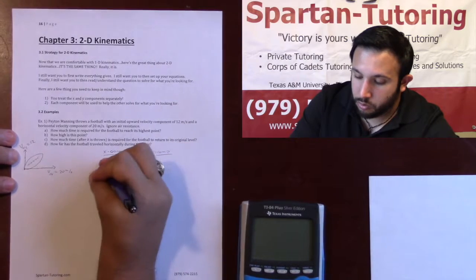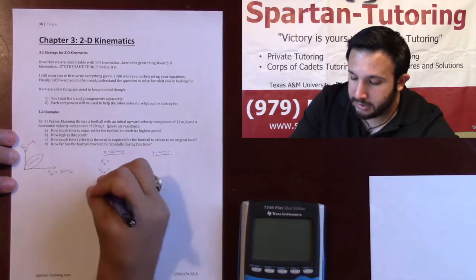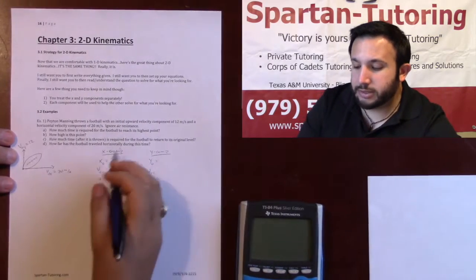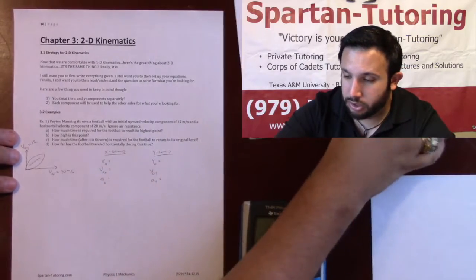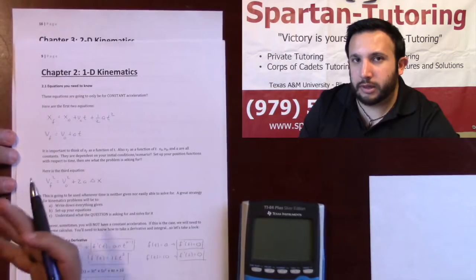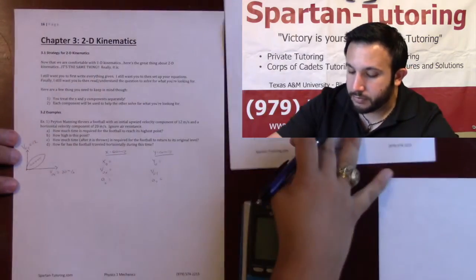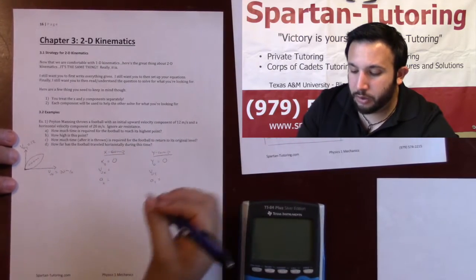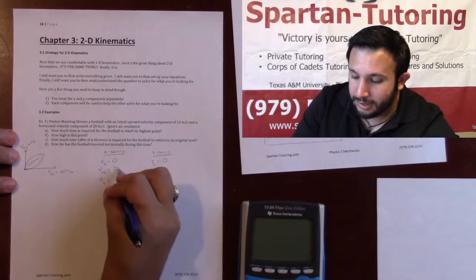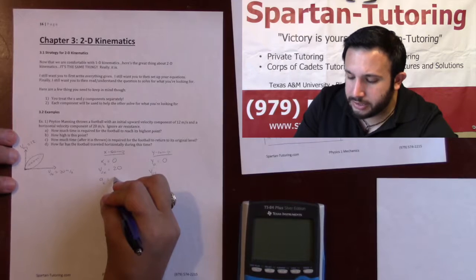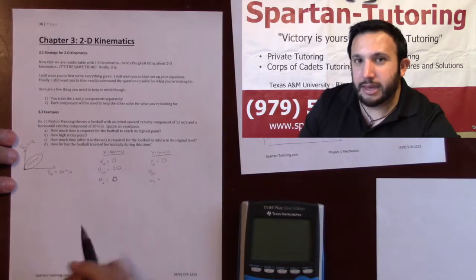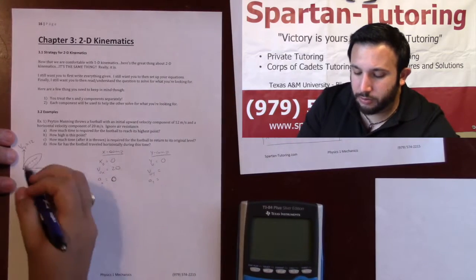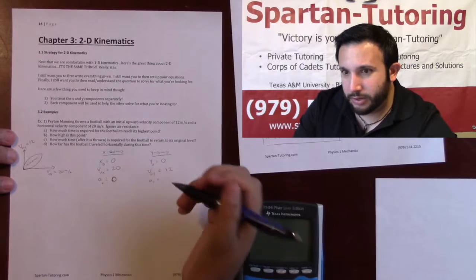Just like with 1D kinematics, we need x-naught, v-naught in x, and acceleration — and we need those for both x and y directions. Once I find all six of these constants, we just throw them into our equations and utilize those equations to answer the problem. We'll set the football's initial position as the origin, so x-naught and y-naught are zero. V-naught in the x-direction is 20, and acceleration in the x-direction is always zero unless otherwise specified. The initial velocity in the y-direction is 12.